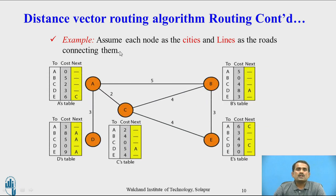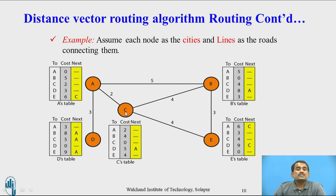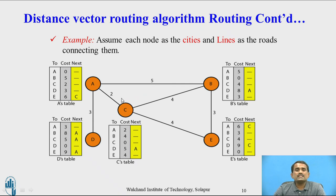Consider this example: assume each node represents a city and the lines represent roads connecting them. In this block diagram, there are 5 nodes: A, B, C, D, and E. These nodes indicate cities, and the lines indicate roads connecting between two cities. We need to create a routing table for each node. From one node to another while transmitting data, we determine via which node we are transmitting and what is the cost.